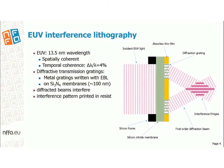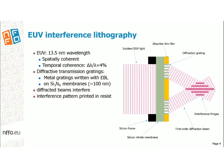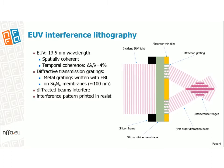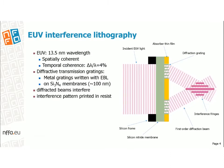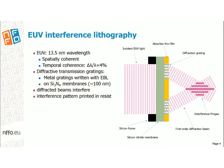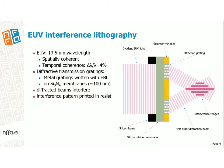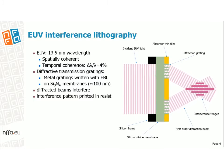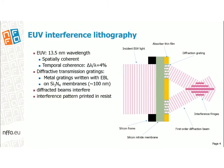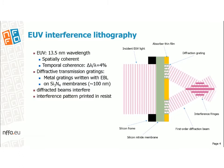Interference lithography is a simple and low-cost method of creating aerial images without the limitations of projection optics. This technique exploits the interference of two or more coherent EUV beams to generate a periodic aerial image on the wafer plane. The EUV interference lithography tool installed at the Swiss Light Source at the Paul Scherrer Institute in Switzerland uses an undulator source to illuminate transmission grating masks with a homogeneous and coherent beam. The gratings are manufactured on silicon nitride membranes using electron beam lithography, and the diffracted beams interfere on the wafer plane creating a sinusoidal aerial image.